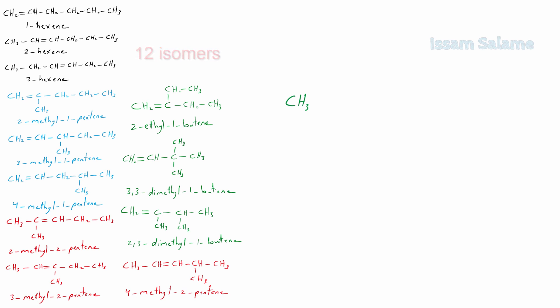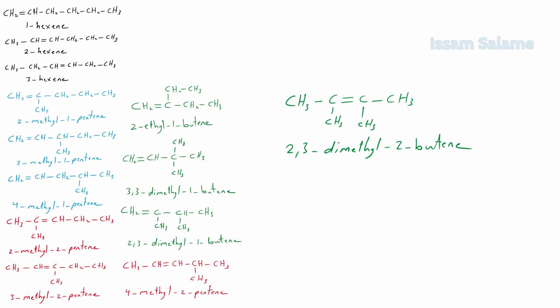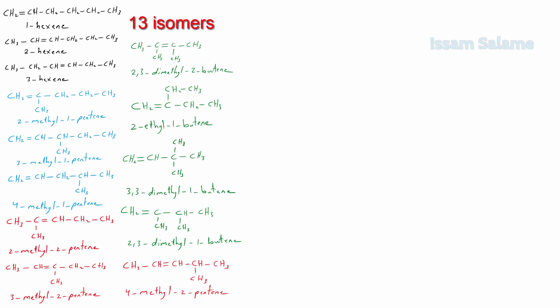Let's put the double bond at the second carbon in butene. We have only one possibility: two methyls, one at the second carbon and one at the third carbon, like this. Its name is 2,3-dimethyl-2-butene. I think that's it for alkenes — I could draw 13 isomers with the formula C6H12.